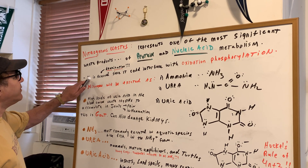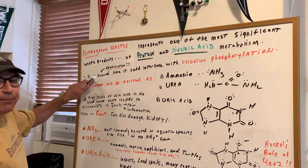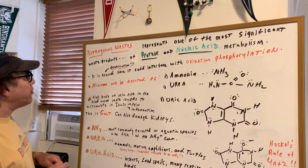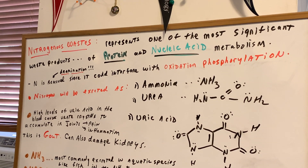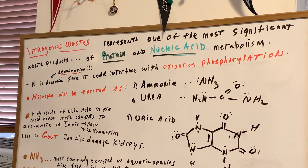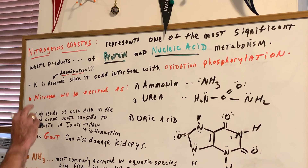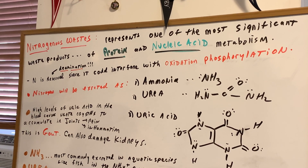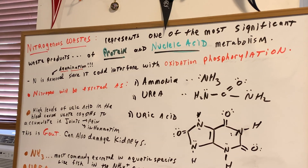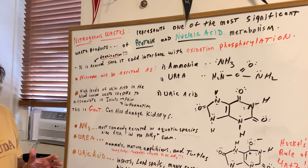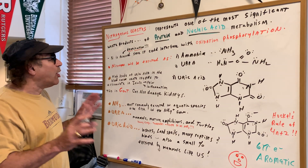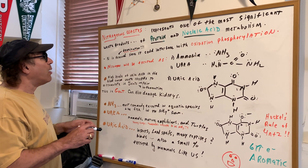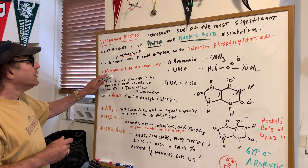The whole point is that nitrogen has to be removed. The removal of nitrogen is called deamination. The reason why is that nitrogen could interfere with oxidative phosphorylation. So, we want to remove the nitrogen from proteins and nucleic acids.